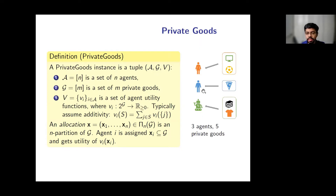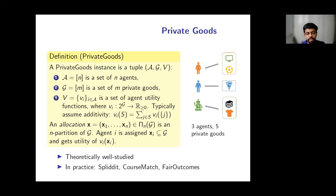In the example on the right, there are three agents and five items. The allocation gives the first two items to the orange agent, the third item to the blue agent, and the last two items to the green agent. Agents can have very different preferences, which they express using utility functions. This model is theoretically well studied and implemented in practice — for instance, the website Splitit, CourseMatch for course allocation at Columbia Business School, and Fair Outcomes for divorce settlements.